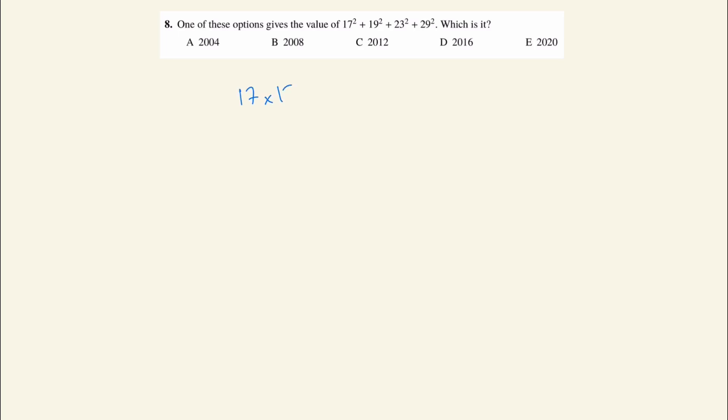So 17², or 17 times 17, whatever it is, will end in a 9 because 7 times 7 is 49. 19² will have to end in a 1 because 9 times 9 is 81.